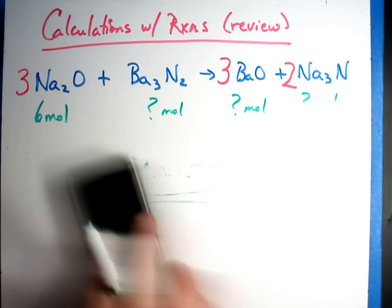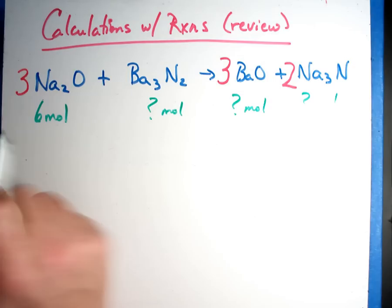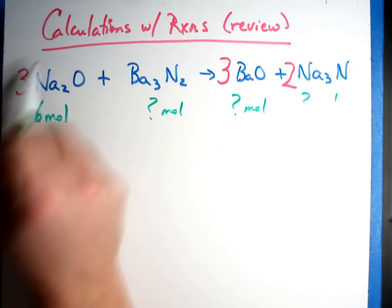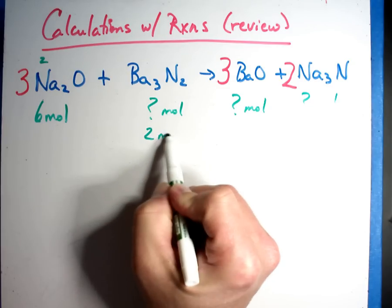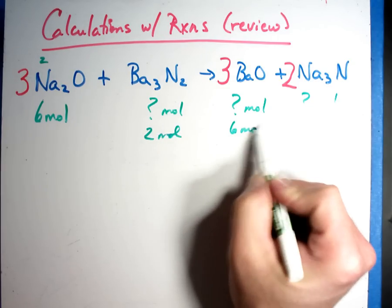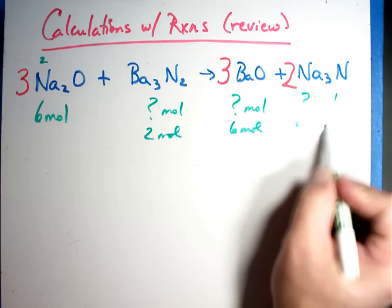So in this example, here's what happens. If six divided by three, that's a multiple of two, everybody's going to change by a multiple of two. So this answer is two moles, this answer is six moles, this answer is four moles. They all multiply by two.